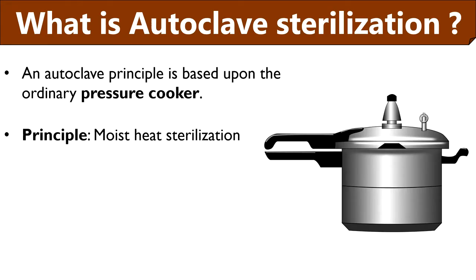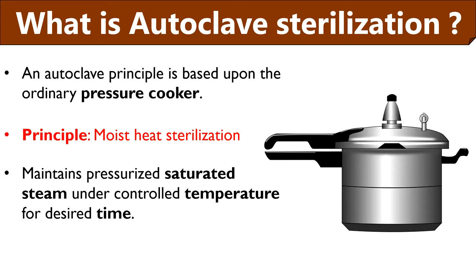Let us discuss what is autoclave sterilization. Autoclave sterilization has the principle similar to the ordinary pressure cooker. It produces high-pressure steam to destroy bacterial cells and fungal spores from different media, samples, equipment and glassware. As autoclave uses dry saturated steam, its principle is based upon moist heat sterilization that causes absolute denaturation and irreversible coagulation of macromolecules like enzymes and structural proteins of microorganisms. It maintains sterile environment by providing pressurized saturated steam under controlled temperature for desired time.